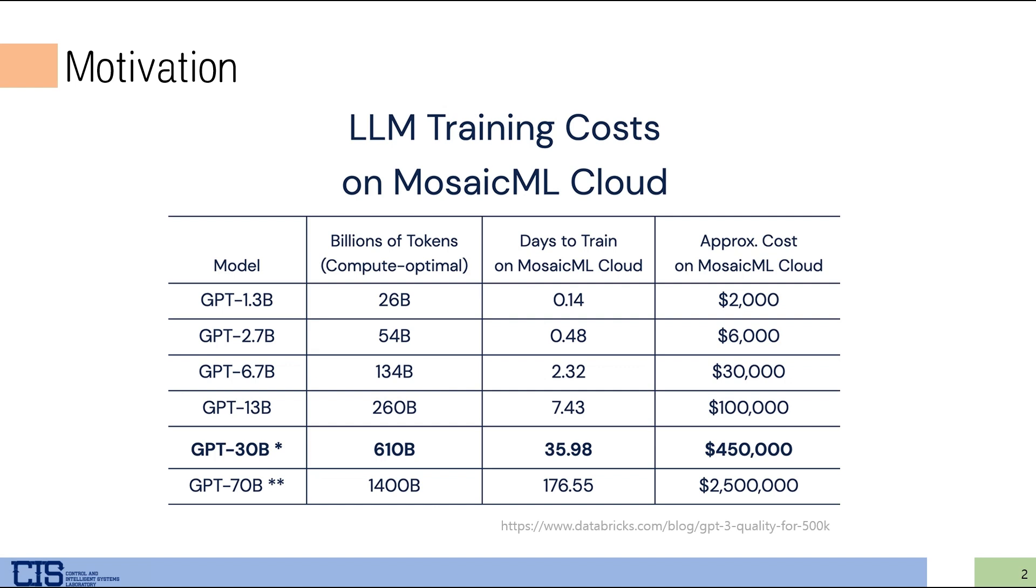As you know, large-scale language models are in the spotlight now, so the number of parameters is increased to improve model performance. I think you are probably most familiar with the GPT model among LLMs. To explain with GPT, as can be seen from the table, as the parameters of the GPT model increase, the time and cost required for training increase exponentially.